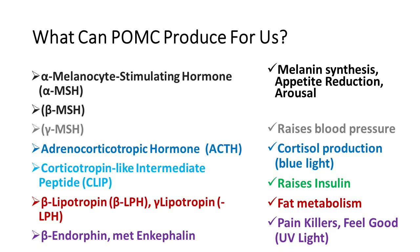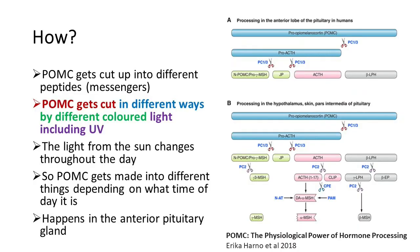Also from cleaving POMC you can make endorphins and enkephalins — this happens in UV light. These endorphins and enkephalins have pain-killing activities and make us feel good, so we are primed to get addicted to the sun. If somebody gives up all their other addictions and just gets addicted to the sun, that's the natural addiction you're meant to have.